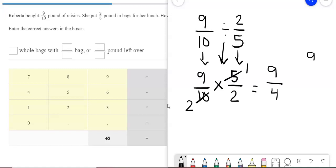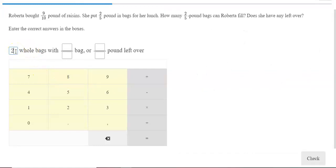This is an improper fraction when you change it to a mixed number. So, I have nine divided by four. Four times two is eight. Nine minus eight is one. So, I get two and one-fourth. Two whole bags with one-fourth bag, or one-fourth pound left over.